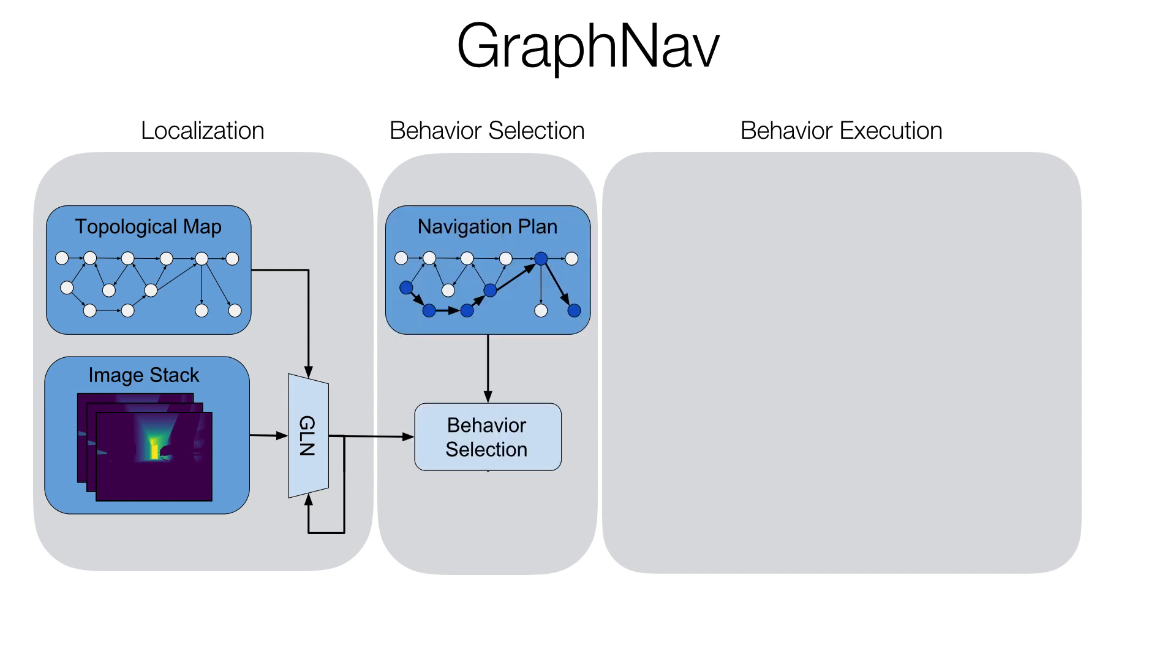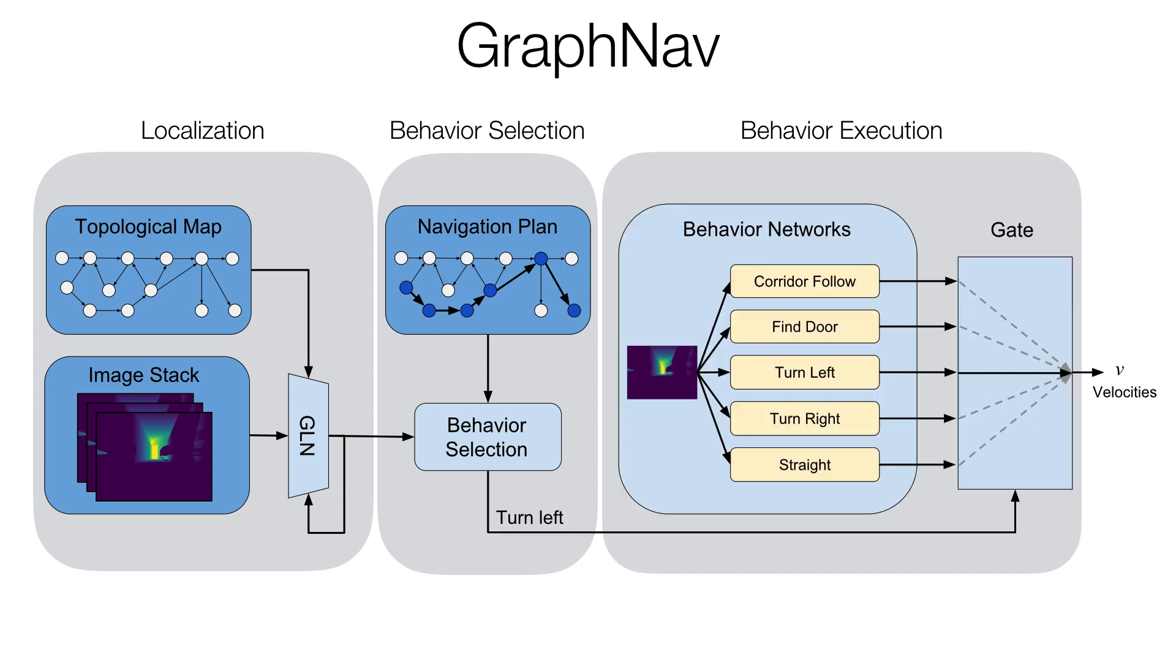Based on the location information and a navigation plan, the behavior selection component then determines which high-level behavior the robot should execute next. Finally, the behavior execution component outputs velocity commands from the chosen behavior neural network.